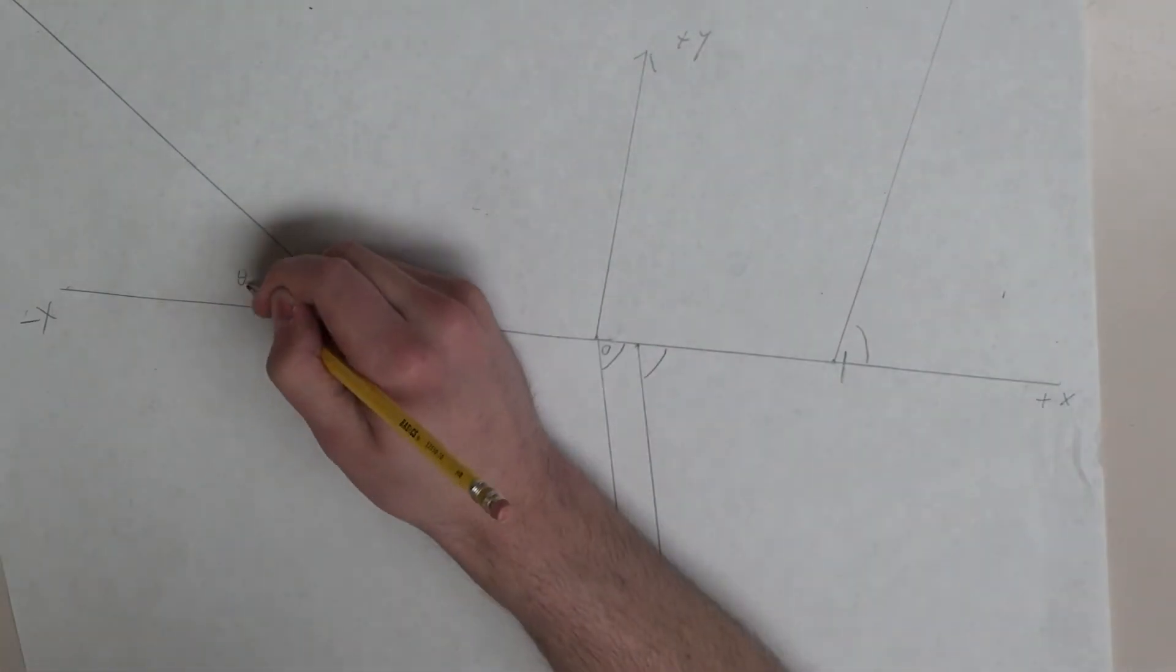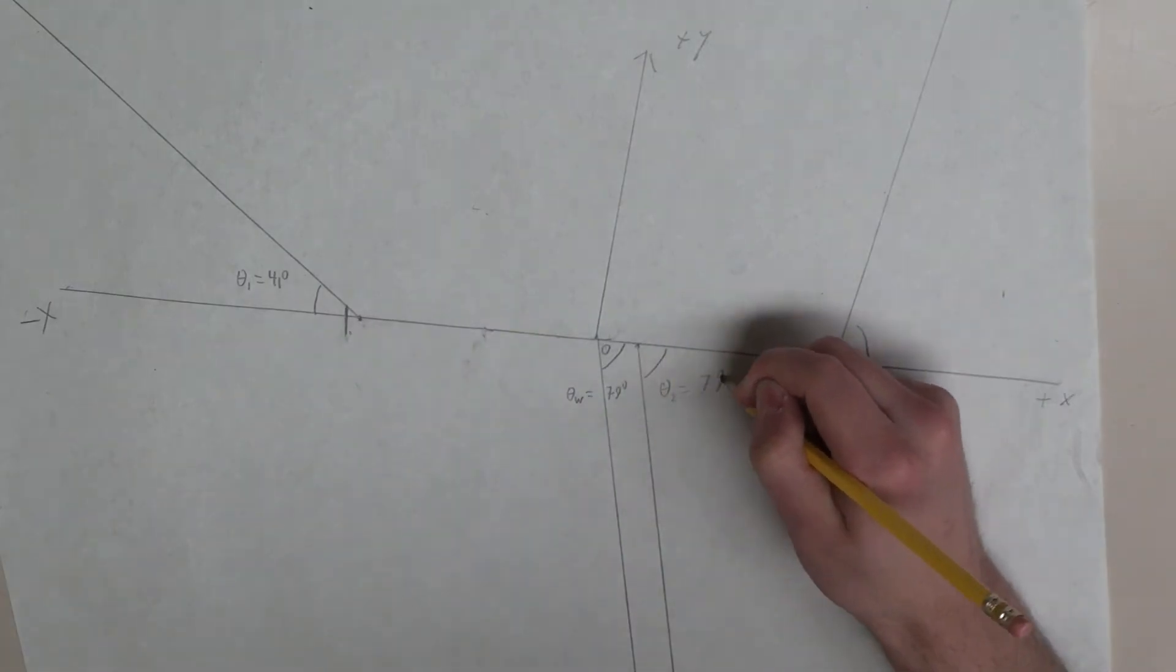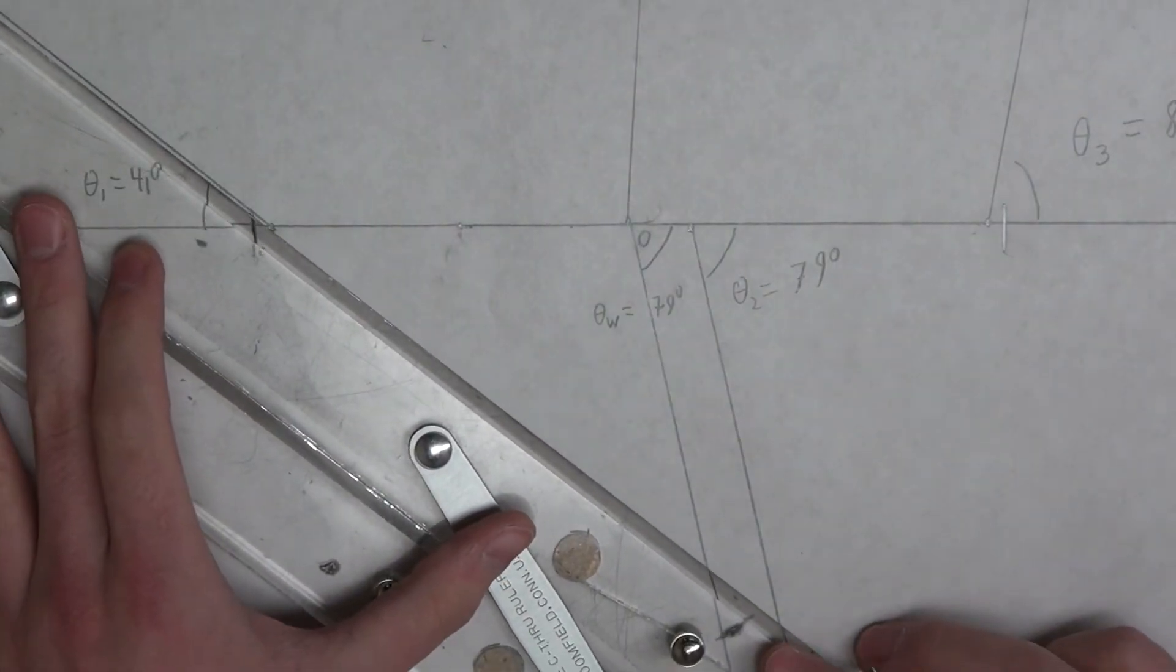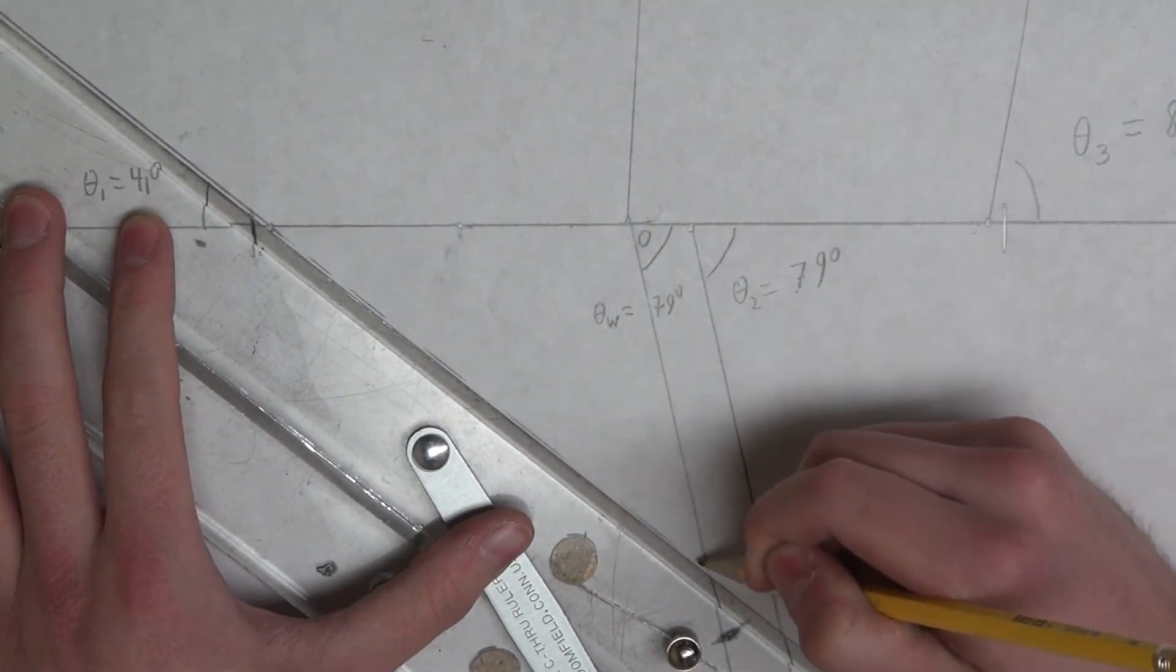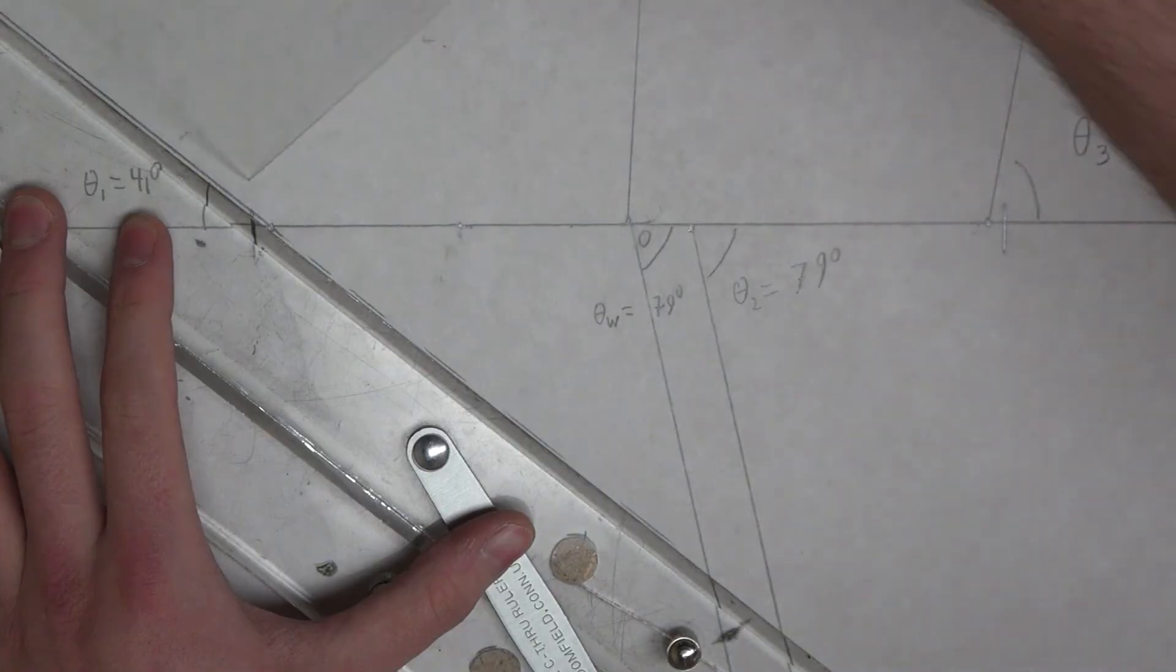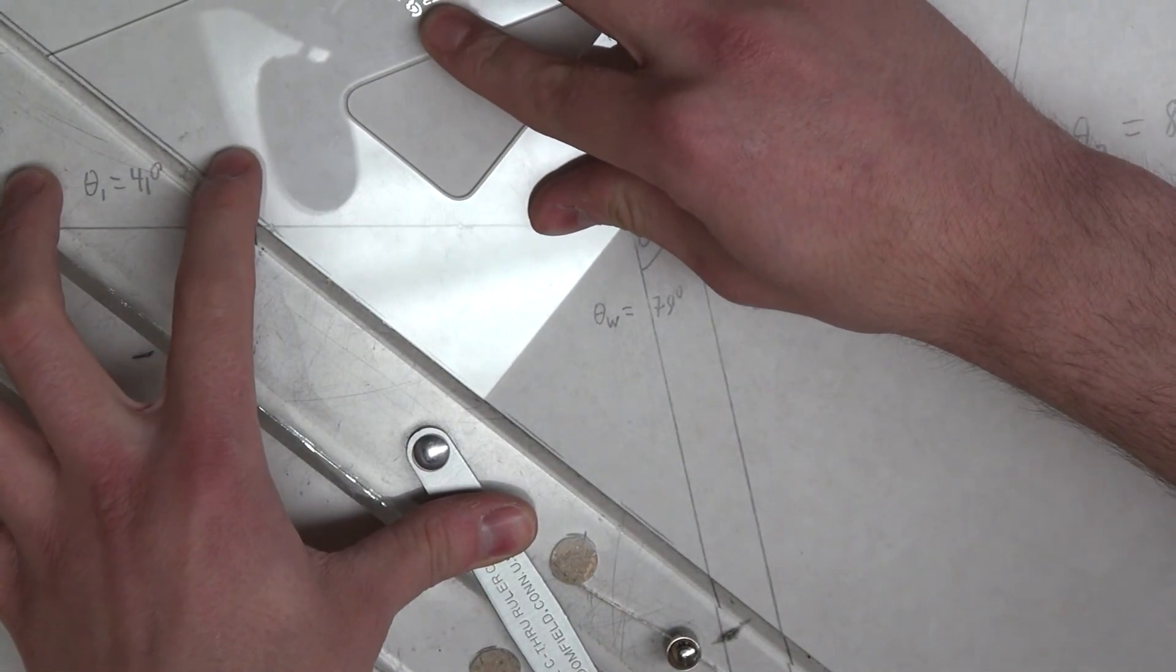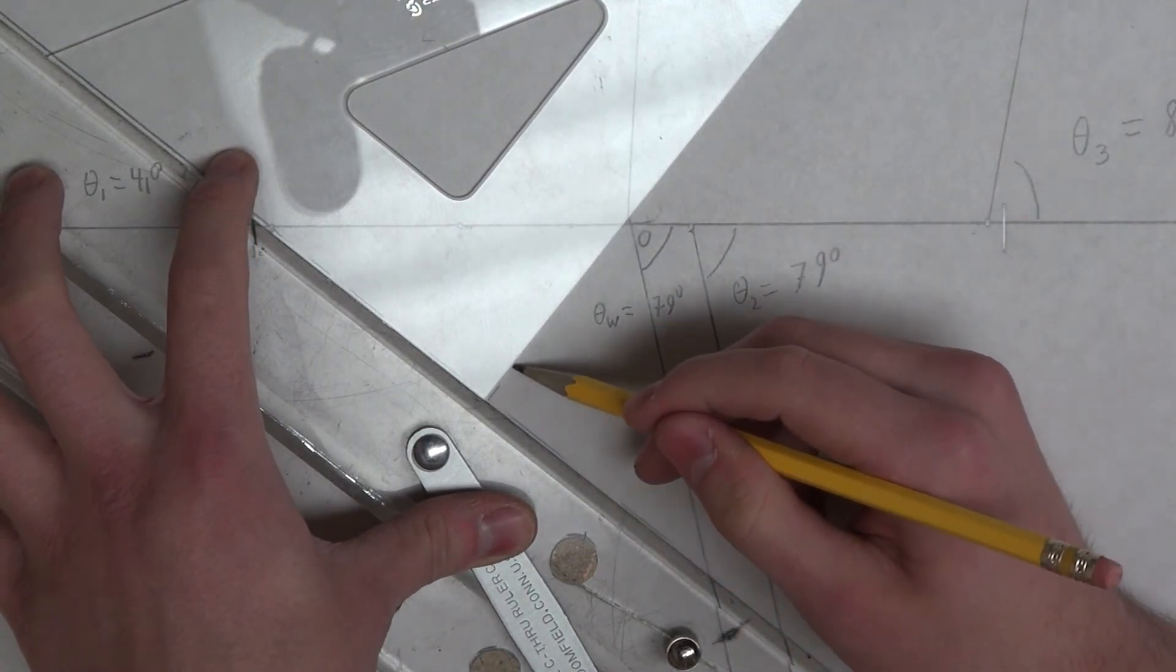To calculate the torques acting on the bar, the lever arm distances must be indicated and measured. Extend the line of action of each force as a dotted or dashed line. For each force, construct a perpendicular line from the origin to the line of action of the force. The length of this perpendicular line is the lever arm distance for that force.